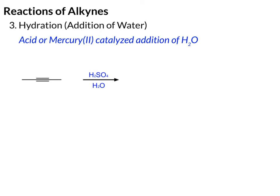Next is the hydration of alkynes. Remember that hydration means we're adding water. We can't just add water by itself — we need to catalyze the reaction, and there are a couple of ways to do that. We can use an acid like H₂SO₄, but in some cases we need an even more enhanced catalyst than sulfuric acid, and we'll use mercury.